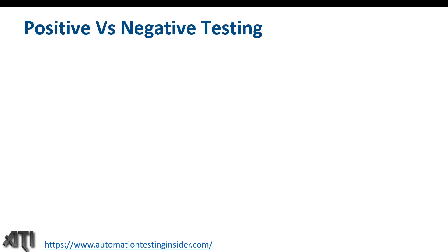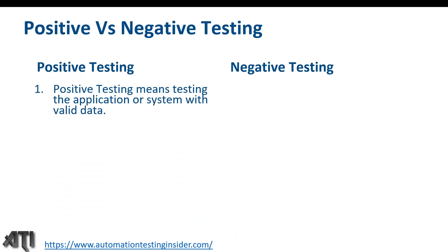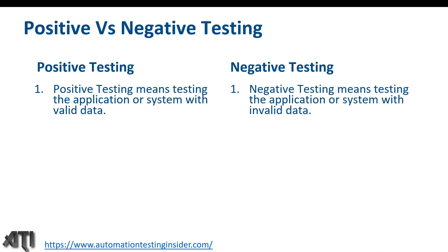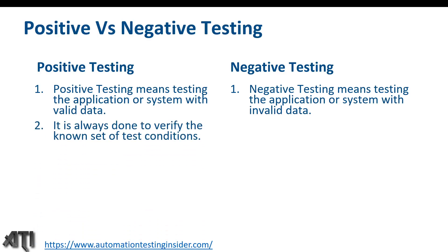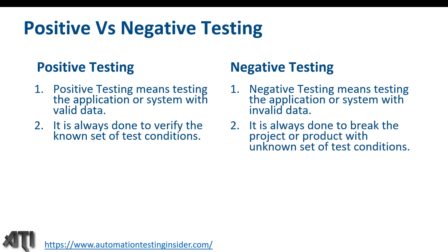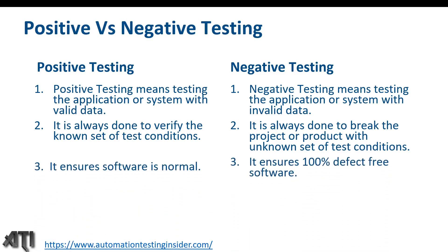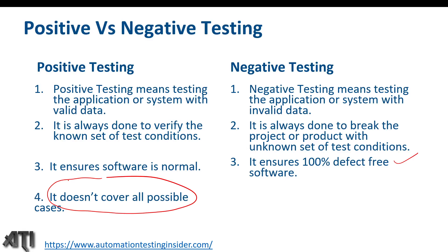Now let's look at the differences between positive and negative testing. Positive testing means testing with valid data; negative testing means testing with invalid data. Positive testing verifies a known set of test conditions; negative testing tries to break the product with an unknown set of conditions. Positive testing ensures software behaves normally; negative testing ensures 100% defect-free software by checking all positive and negative scenarios. Positive testing doesn't cover all possible cases since it tests within limits; negative testing covers all possible cases and scenarios.